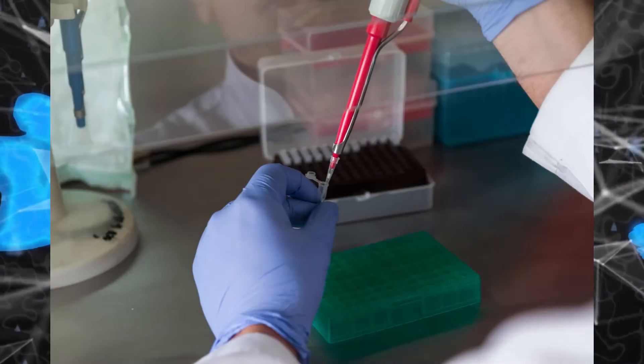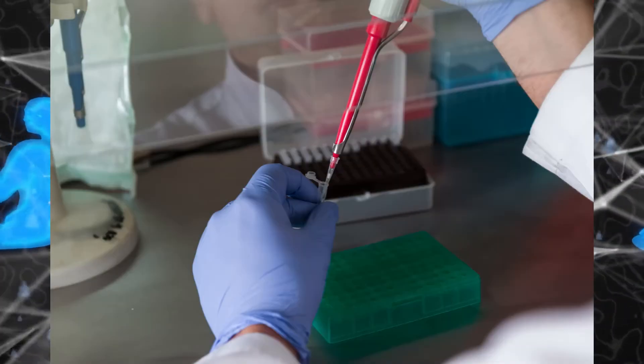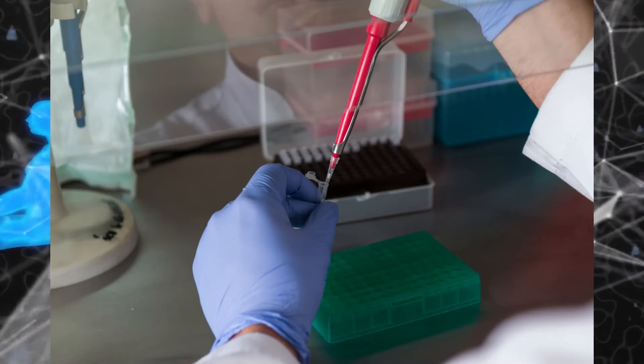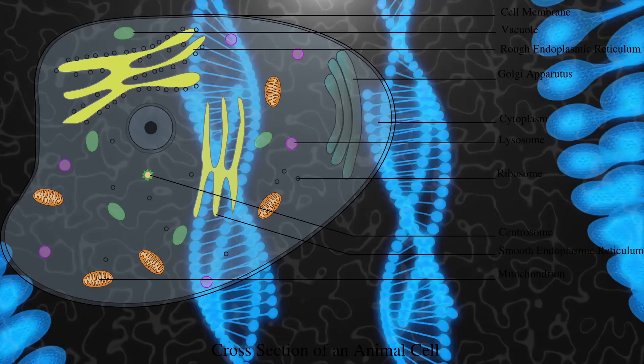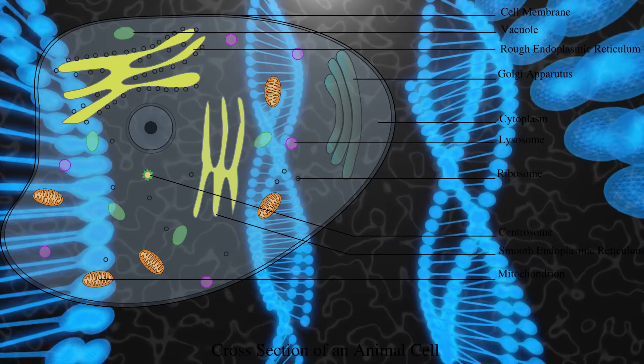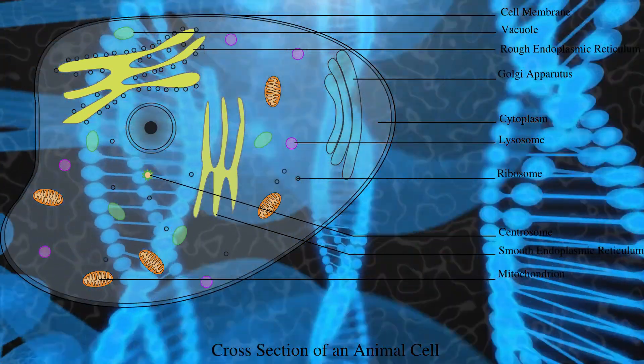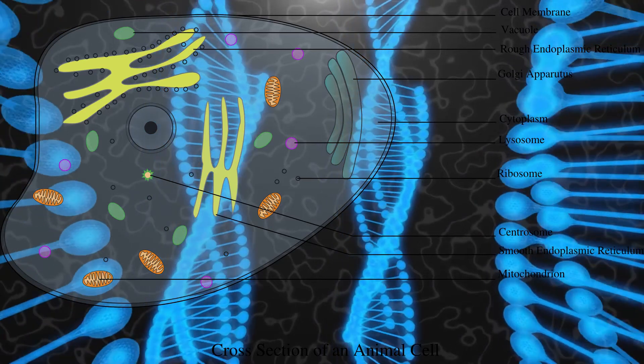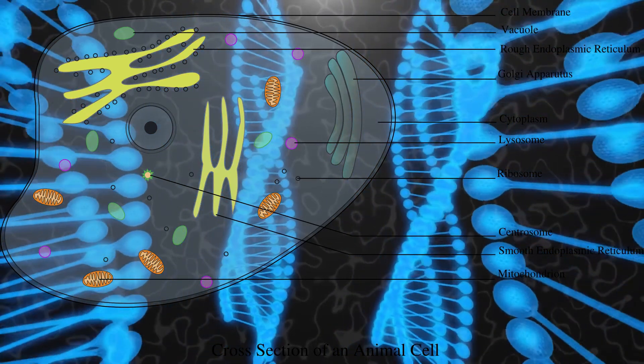The RNA is then extracted and processed further to remove something called the poly-A tail. This is normally used to try and maintain the integrity of the RNA molecule within the cell and prevent it spontaneously degrading.